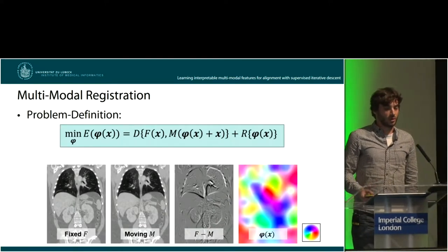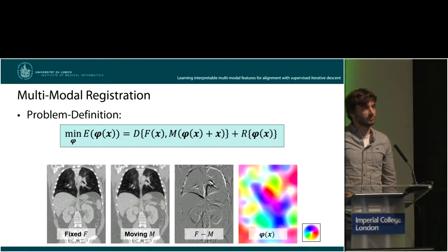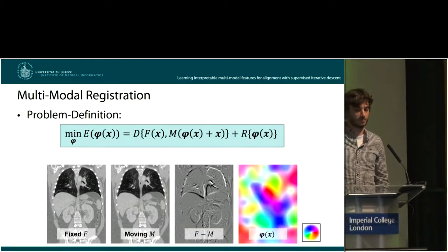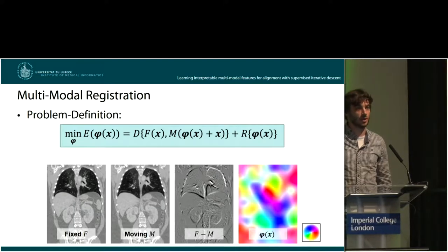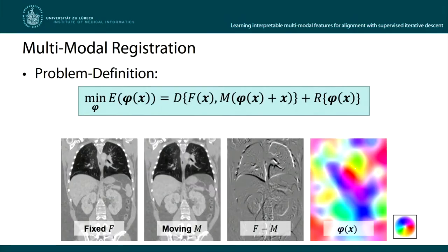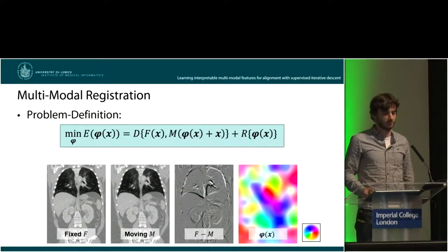To give you a more formal problem definition: basically what you are trying to do is minimizing an energy equation that is commonly built up by two terms. The first one is the similarity measure that measures how well the fixed and moving image align. The second one penalizes your found transformation by its plausibility — for example, in medical imaging you don't want to have folding in your fields because this is not plausible for human tissue.